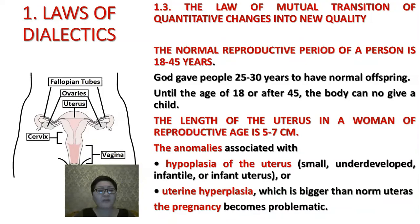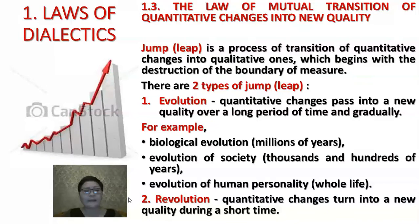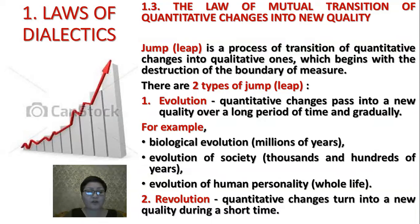The next concept of this law is jump or leap. Jump is a process of transition of quantitative changes into qualitative ones, which begins with the destruction of the boundary of measure. There are two types of jump or leap. The first is evolution, where quantitative changes pass into a new quality over a long period of time and gradually. For example, biological evolution, which lasts millions of years, or the evolution of society, which equals thousands and hundreds of years.